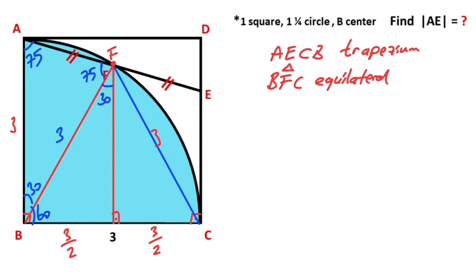Therefore, here is 30 degrees, here is 45 degrees, this angle is 60 degrees, and 30 degrees left here. Next step: if you draw a perpendicular line opposite the side of 45 degrees.